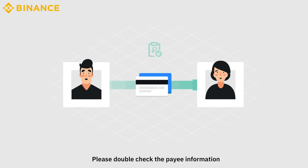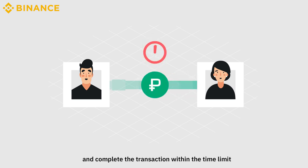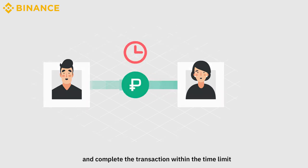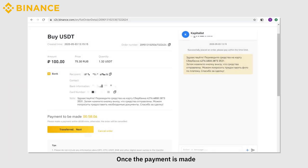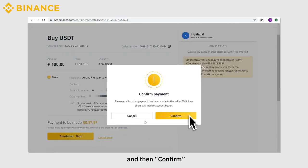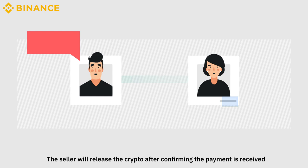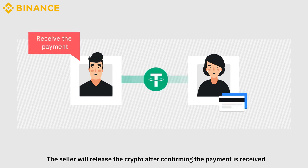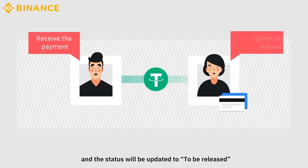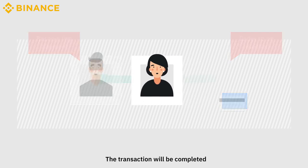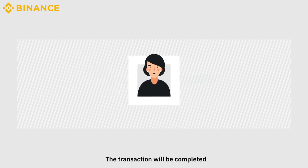Please double check the payee information and complete the transaction within the time limit. Once the payment is made, click on Mark as Paid and then Confirm. The seller will release the crypto after confirming the payment is received, and the status will be updated to To Be Released. The transaction will be completed.